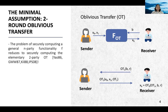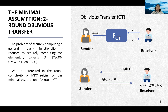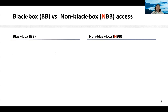As mentioned earlier, it is known that the problem of securely computing a general n-party functionality reduces to securely computing the elementary two-party OT. Based on this profound result, we are interested in the round complexity of MPC relying on the minimal assumption of two-round oblivious transfer.